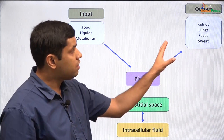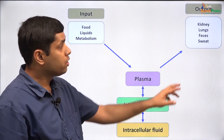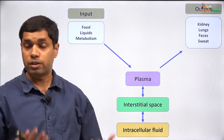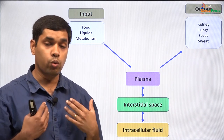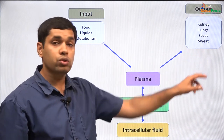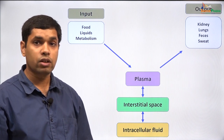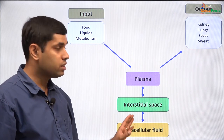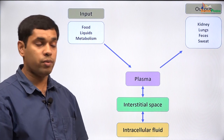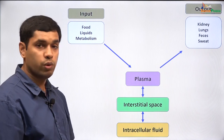Similarly, if water has to be excreted, this water output happens primarily through the kidney in the form of urine; also during feces there is water excretion. When we breathe out, we breathe out water vapor, so there is water loss due to breathing, and also through sweat there is a lot of water loss. These are the ways in which we take water into our system and remove it, and how the different body fluid compartments interact with one another.